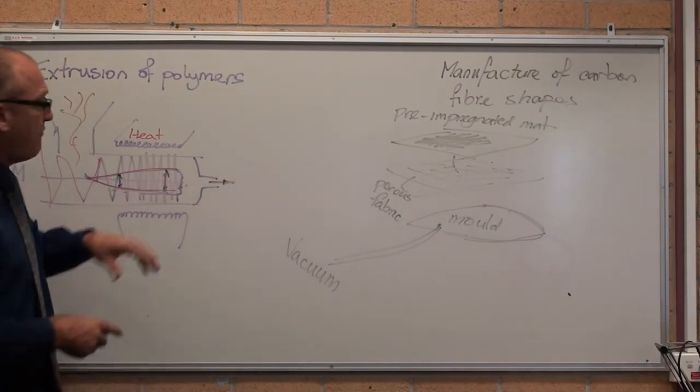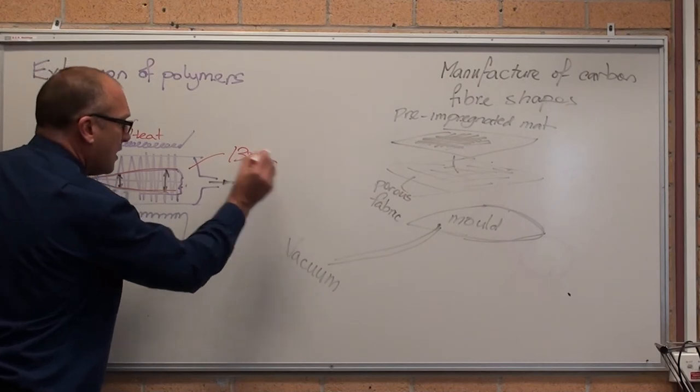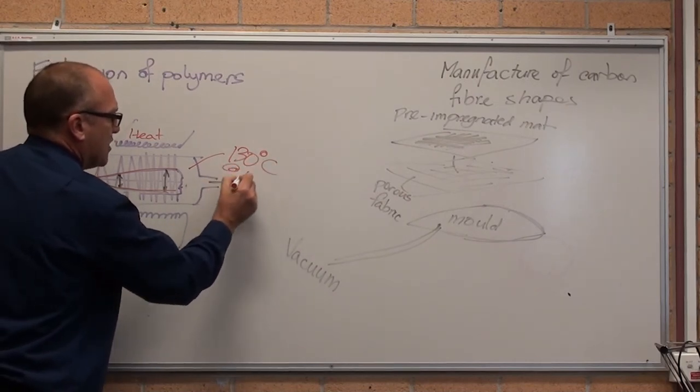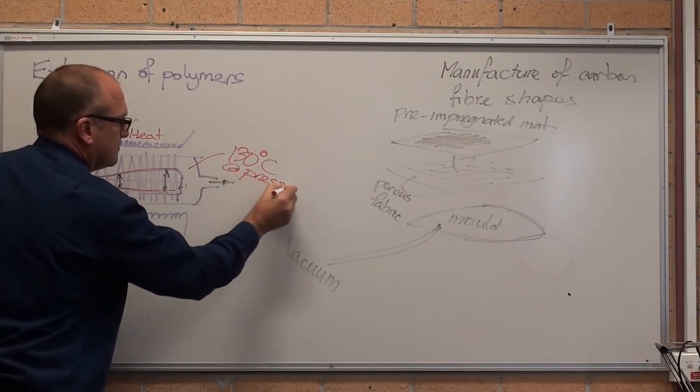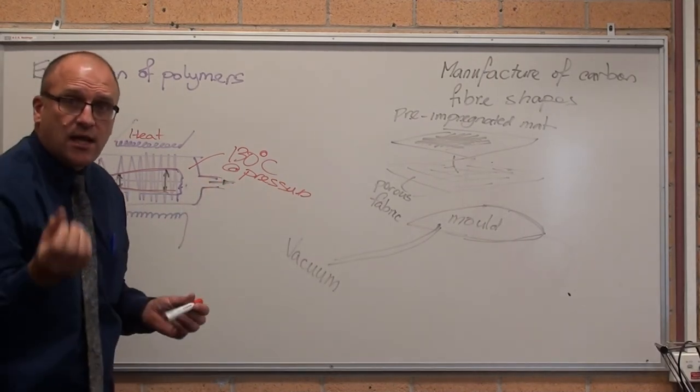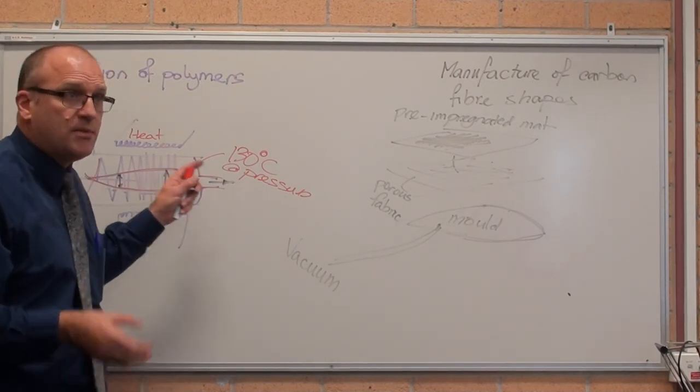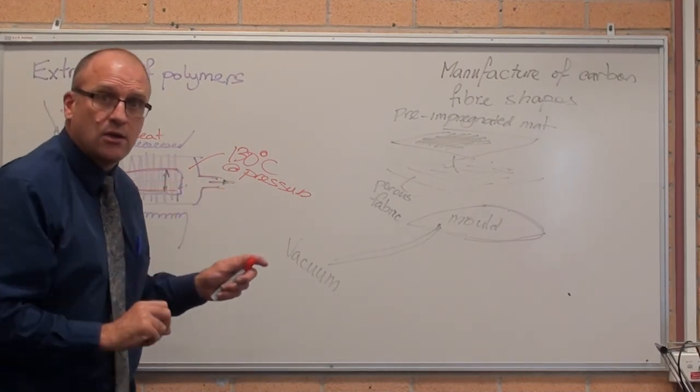At this point, you have got molten plastic, let's say 130 degrees centigrade at pressure, and it is forced out a nozzle. Exactly the same way as we looked at extrusion with metal, extrusion with polymers. You just force it through a nozzle.